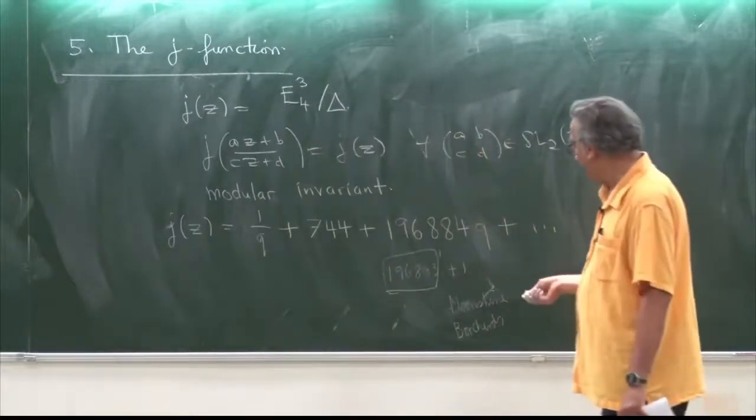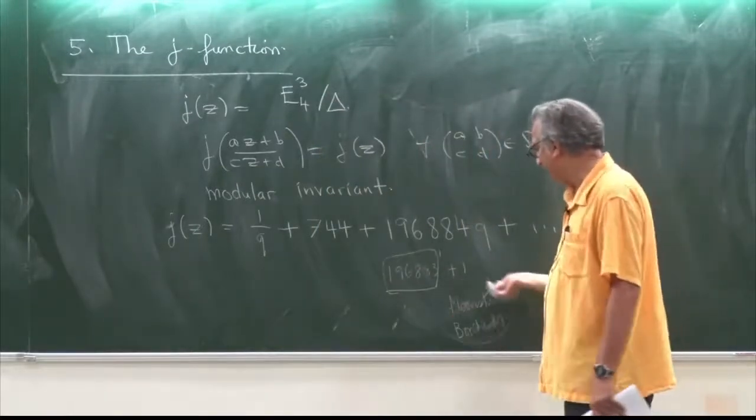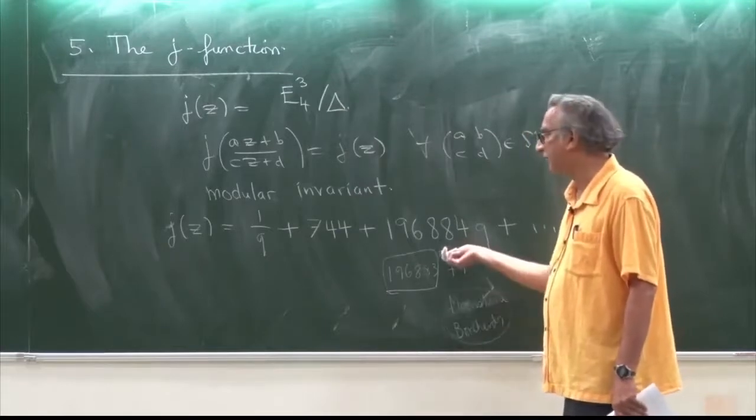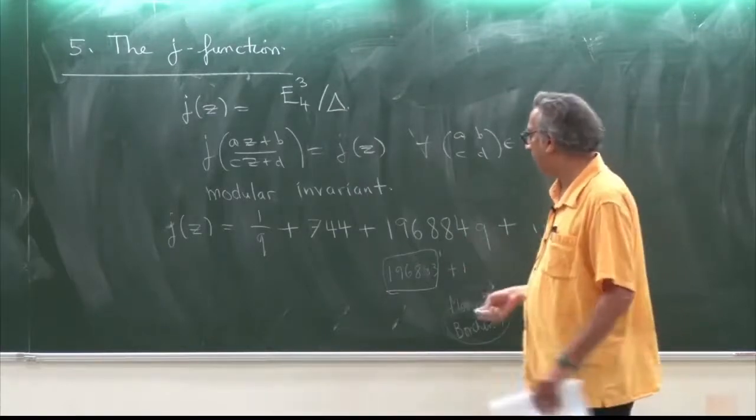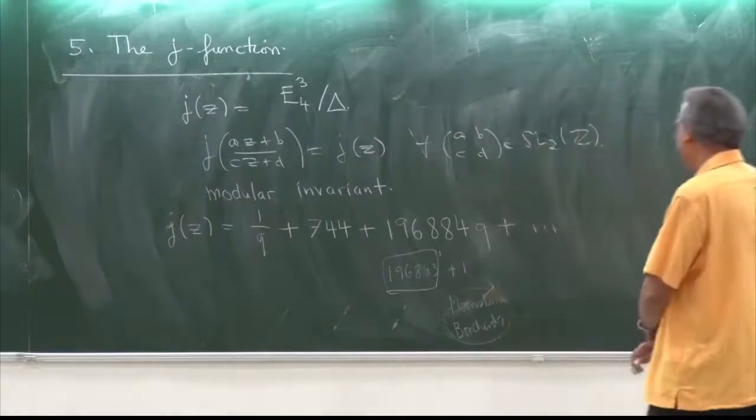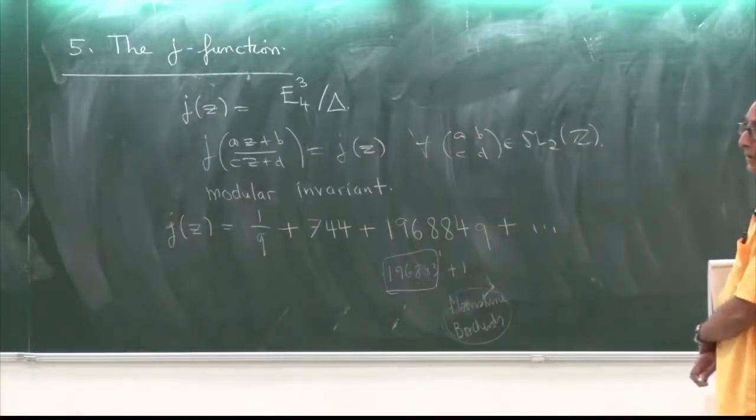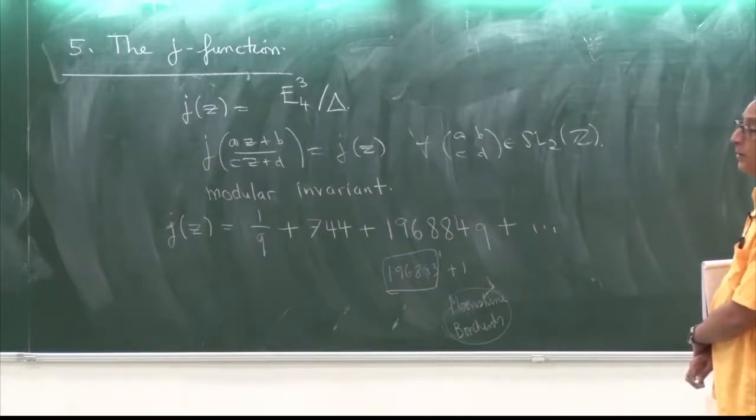The connections with these coefficients was a 20th century discovery, and the understanding of the J function is central to the classification of finite simple groups.